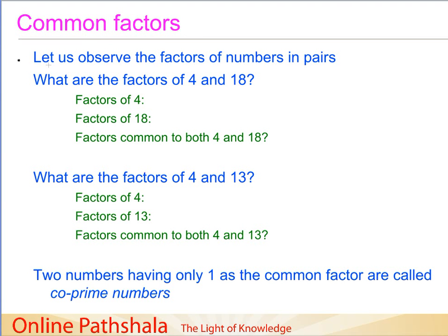In order to understand common factors, let us first observe the factors of numbers when we take them in pairs. As an example, we will try to find out the factors of the number 4 and the number 18. So let us write down the factors of the number 4. The factors of the number 4 will be 1, 2, and 4.